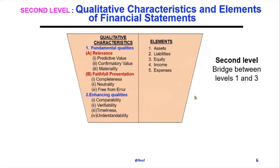Second level: qualitative characteristics and elements of financial statements. Qualitative characteristics are divided into two categories: fundamental qualities and enhancing qualities. Fundamental qualities include relevance and faithful presentation. Relevance has three sub-qualities: predictive value, confirmatory value, and materiality. Faithful presentation also has three qualities: completeness, neutrality, and freedom from error.